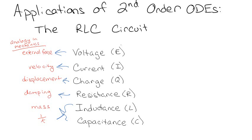Voltage itself — some people call it V, some people call it E, probably because it was originally called the electromotive force, or EMF. You may also hear it called potential difference. For the purposes of this, we'll call it E, and it's measured in volts.